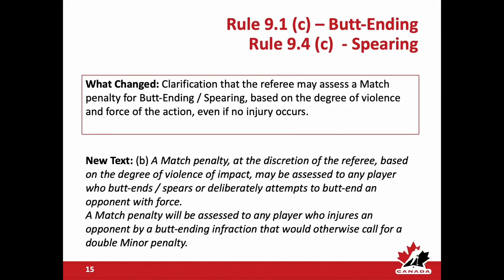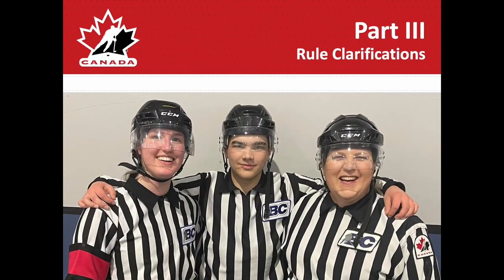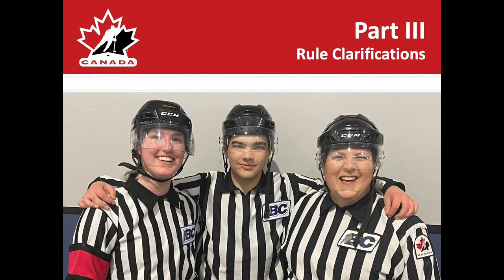Rules 9.1C (butt ending) and 9.4C (spearing) have seen the same change: a referee may now assess a match penalty for butt ending or spearing based upon the degree of violence or force of that action, even if no injury results. Previously a match penalty could only be assessed when an injury resulted. This better aligns with the criteria of all other rules — the match penalty is now assessed based on the referee's interpretation of degree of violence or force. It is not a fundamental change but an important clarification within both rules.